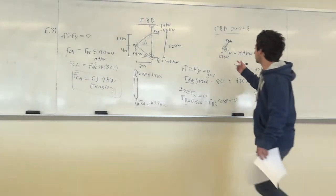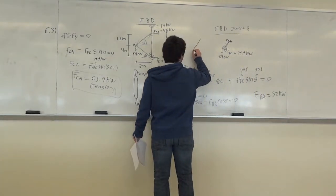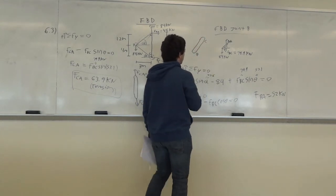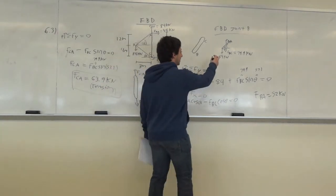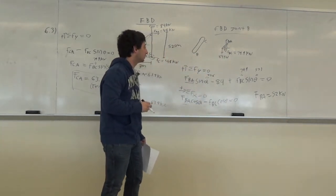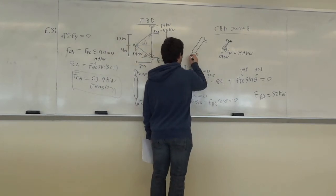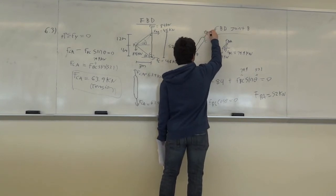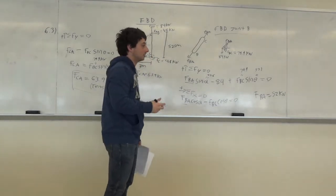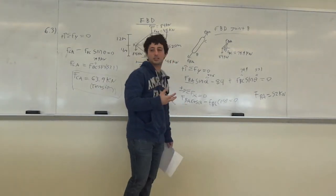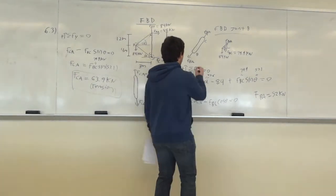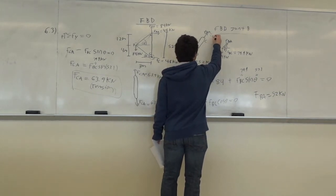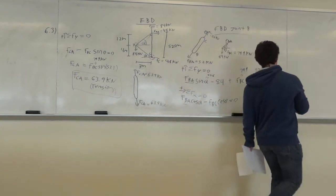F_BA = 52 kilonewtons. Drawing the free body diagram of member BA shows it is in tension. Congratulations — this is the whole chapter. The trusses just get more complex after this problem, but the approach remains the same. F_BA = 52 kilonewtons in tension.